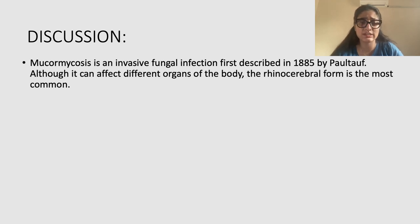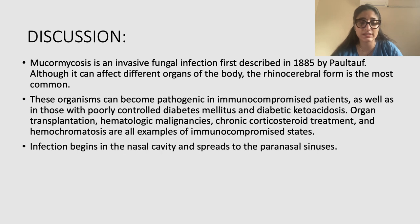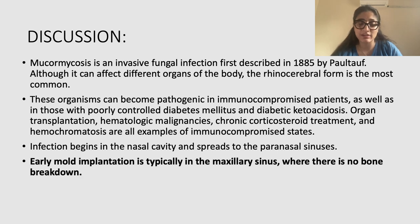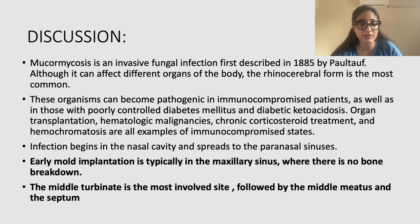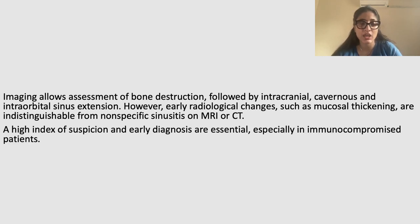Discussion: Mucormycosis is an invasive fungal infection first described in 1885 by Paul Torf. Although it can affect different organs of the body, the rhinocerebral form is the most common. These organisms can become pathogenic in immunocompromised patients as well as in those with poorly controlled diabetes mellitus and diabetic ketoacidosis. Organ transplantation, hematological malignancies, chronic corticosteroid treatment, and hemochromatosis are also examples of immunocompromised states. Infection begins in the nasal cavity and spreads through the paranasal sinuses. Early mold implantation is typically in the maxillary sinus where there is no bone breakdown, and then the middle turbinate is the most commonly involved site. Imaging allows assessment of bone destruction followed by intracranial, cavernous, and intraorbital extension. However, early radiological changes such as mucosal thickening are indistinguishable from non-specific sinusitis on MRI or CT. Therefore, a high index of suspicion and early diagnosis are essential, especially in immunocompromised patients.